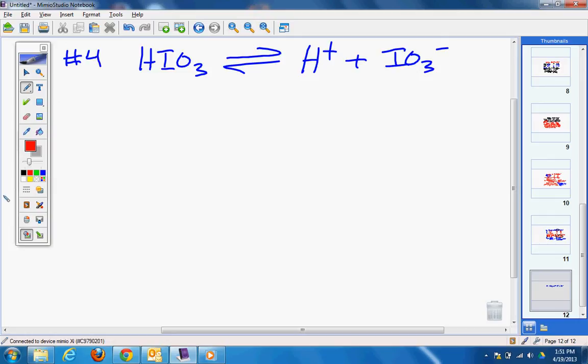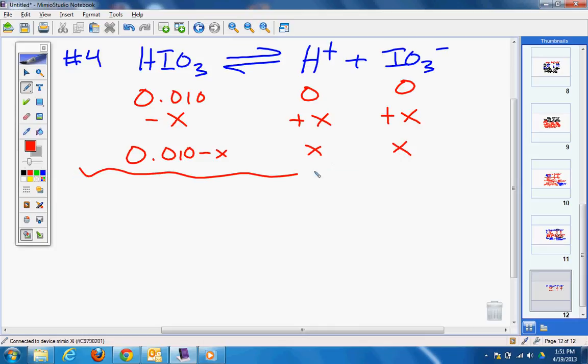And what would I have? 0.010 for initial. And zero, zero for the products. Change is minus X, plus X, and plus X. We're good to go on that.